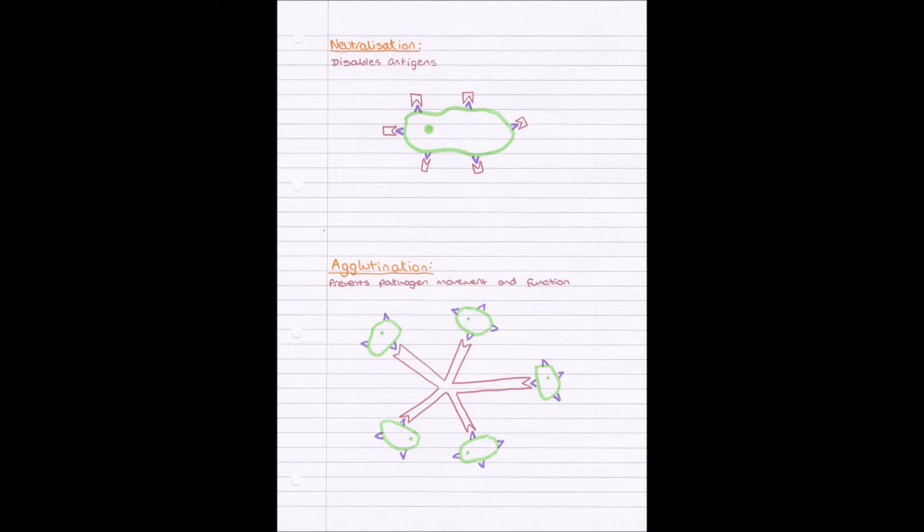Firstly we need to know what antibodies are actually for. We've said that they have the reverse complementary shape to the antigen, but why does that benefit them? What do they actually use it for? So we have these two processes here that we need to know about.